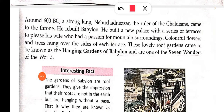Around 600 BCE, one more very strong king came — Nebuchadnezzar, the ruler of the Chaldeans. He came to the throne and completely rebuilt Babylon. He built new palaces and a series of terraces to please his wife, who had a passion for mountains. He planted colorful flowers and trees, creating lovely roof gardens.